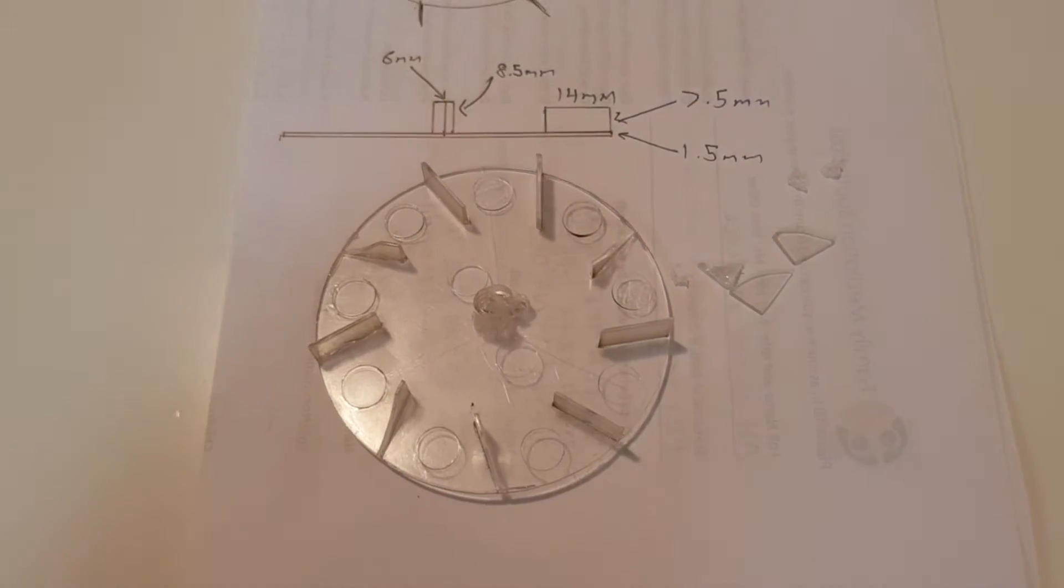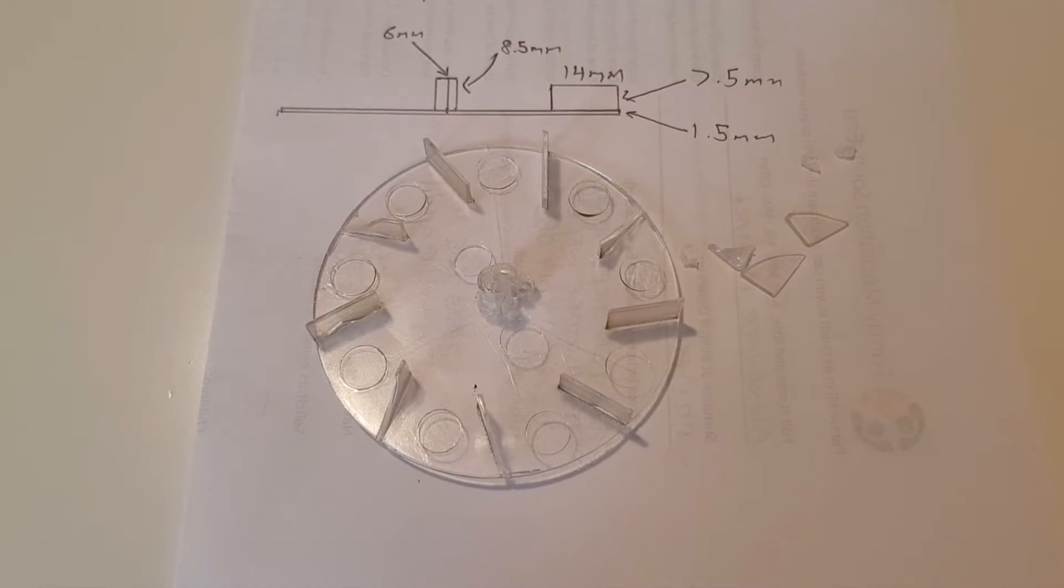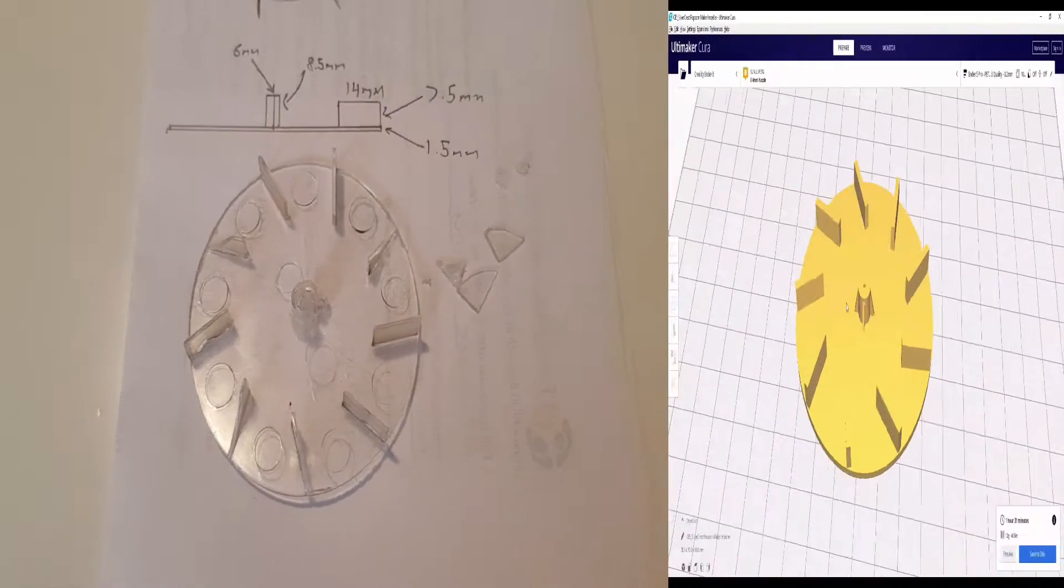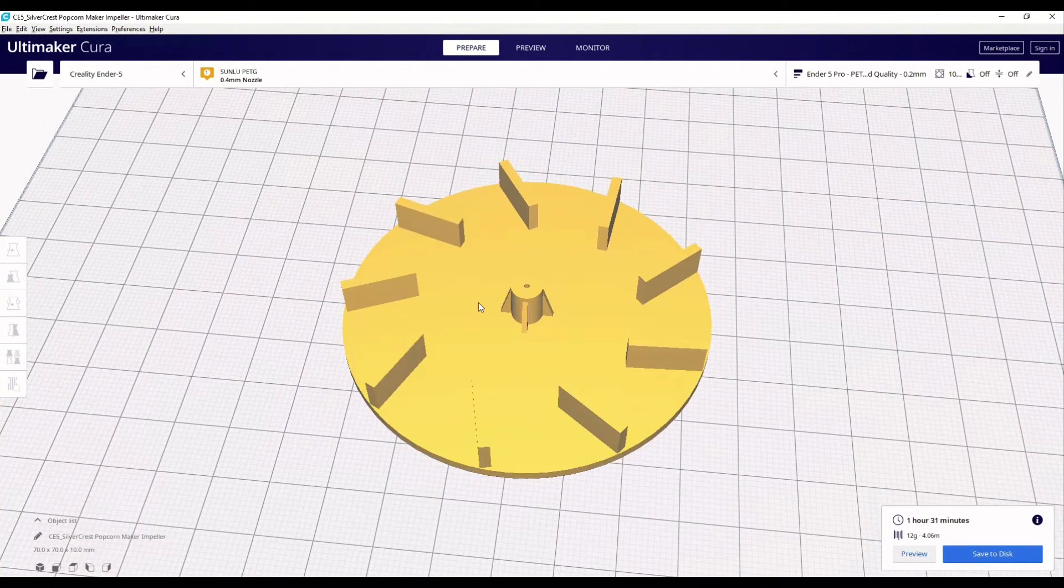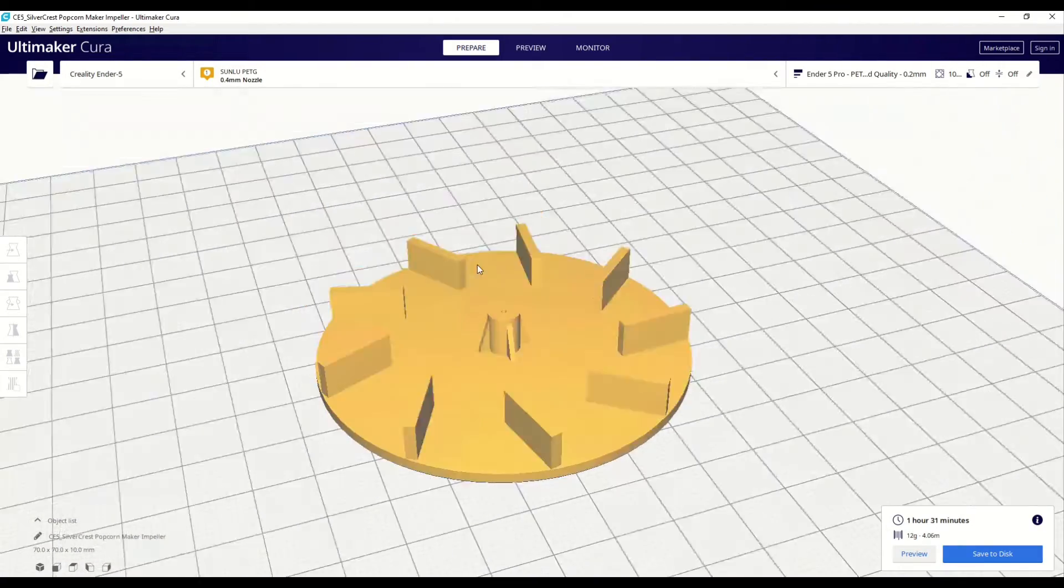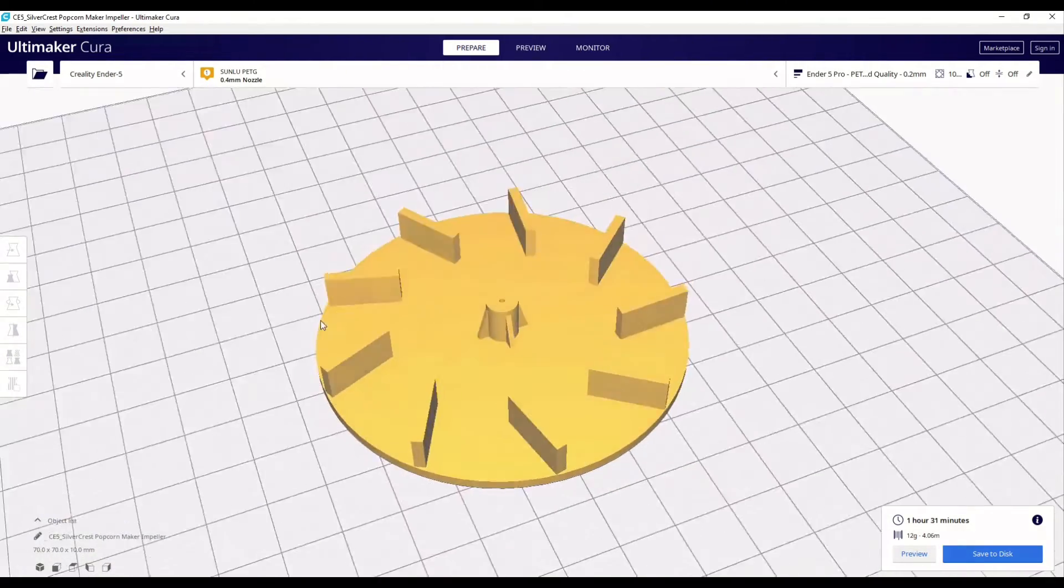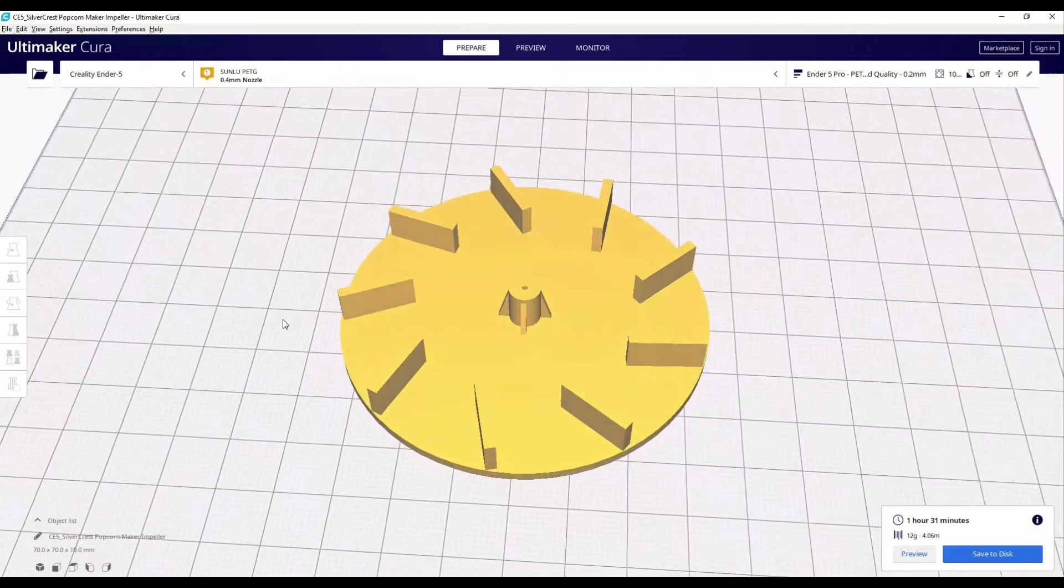So here we are inside Cura, the slicing software I use with my 3D printer, and this is the part that I knocked up in Tinkercad which took about half an hour to make and hopefully will work as a suitable replacement.